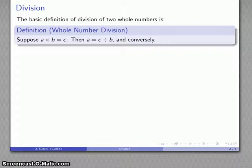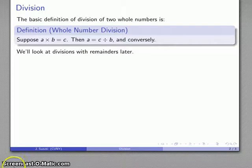Now this assumes that we have a division that in the usual language comes out evenly, which is to say that c divided by b has to be equal to a with nothing left over, and so we'll actually look at division with remainders a little bit later on.